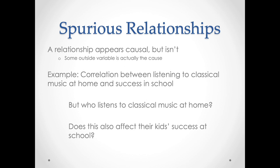Spuriousness really deserves its own discussion because it's such an important phenomenon. Spuriousness is when a relationship appears causal but isn't, because there's some outside or external variable that is driving both what we think of as the cause and what we're seeing as the effect. Spurious relationships are incredibly common within the social sciences — often what appears to be a relationship between variables turns out to actually be caused by some other variable we hadn't thought of.